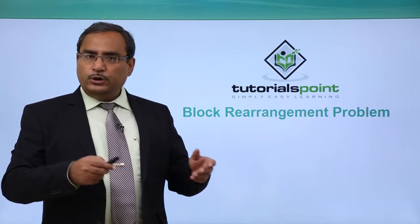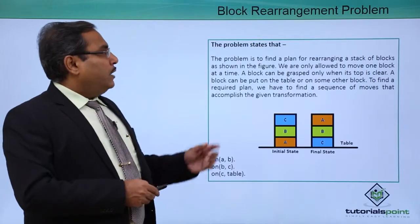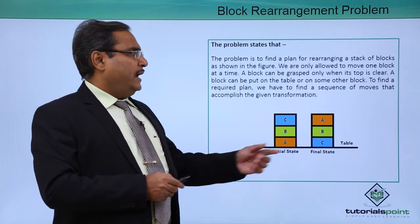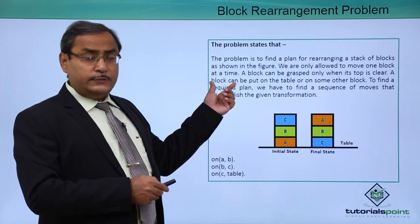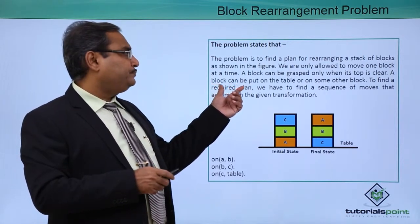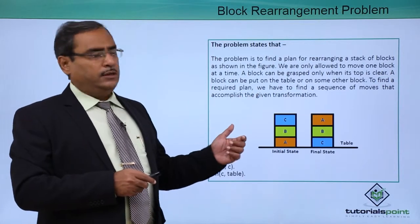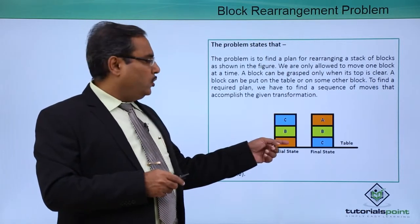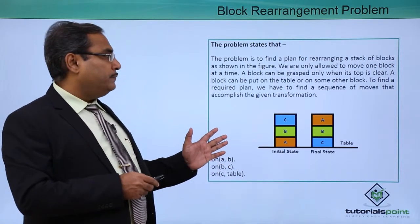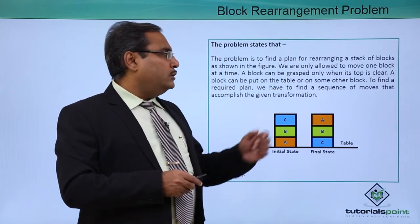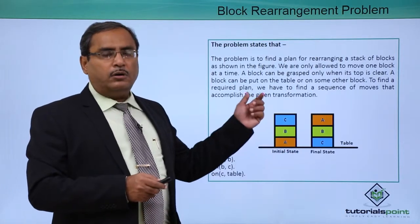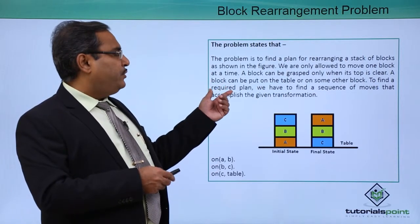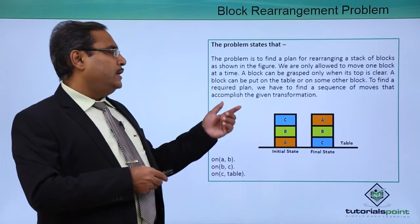Block rearrangement problem. This is a very classical problem. The problem is to find a plan for rearranging a stack of blocks as shown in the figure, and we are only allowed to move one block at a time — that is constraint number one. A block can be grasped only when its top is clear. So in this figure, only block C can be grasped because C has its top clear, not A, not B. A block can be put on the table or on another block. To find the required plan, we need to find a sequence of moves that accomplishes the given transformation.